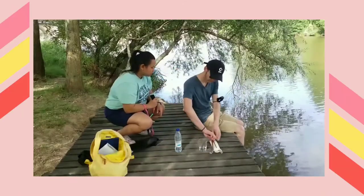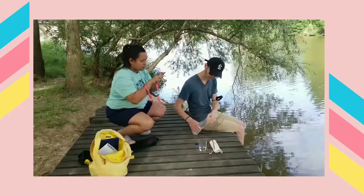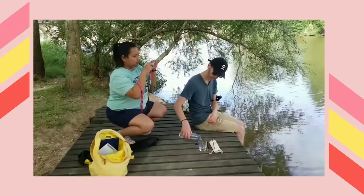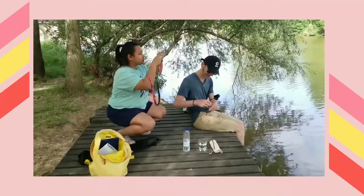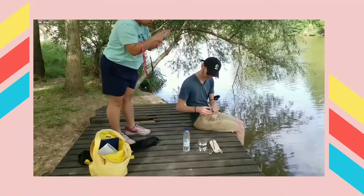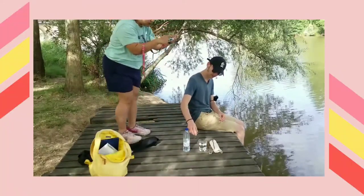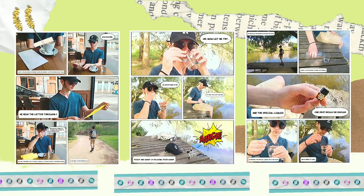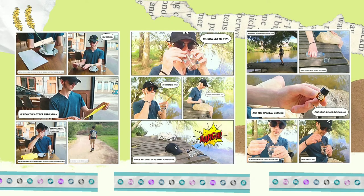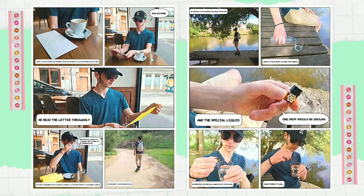Start taking pictures according to your storyboard. You can always improvise during the shots, and you can take the picture from different angles so that later on you can have different options. Once you've done that, you can start to create the narrative by using a free comic app on your phone or tablet.